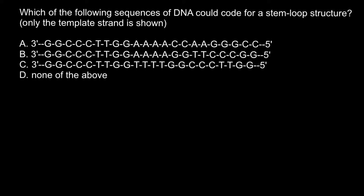Hello and welcome to Nikolai's genetics lessons. Today's problem is: which of the following sequences of DNA could code for the stem loop structure? Only the template strand is shown, and we have three DNA sequences. DNA doesn't make three-dimensional structures like stem loop structures — only messenger RNA or non-coding RNA makes such structures.